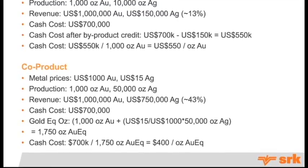In a co-product example, 1,000 ounces gold and 50,000 silver, where silver is contributing 43% — past the 20% rule. You take the cash cost and convert the silver to gold equivalent, arriving at $400 per ounce equivalent gold.